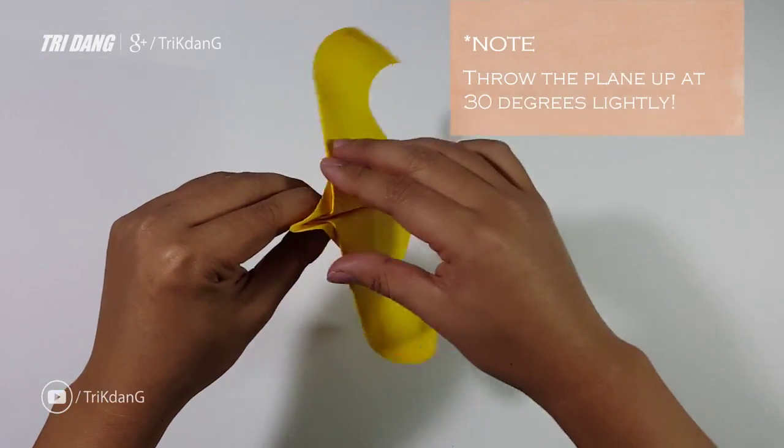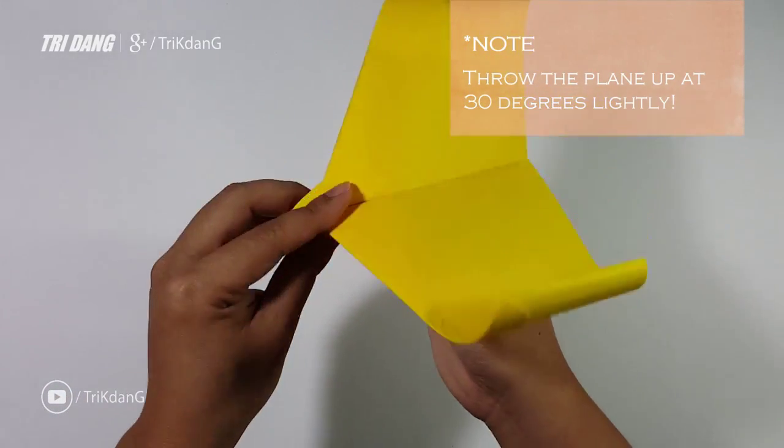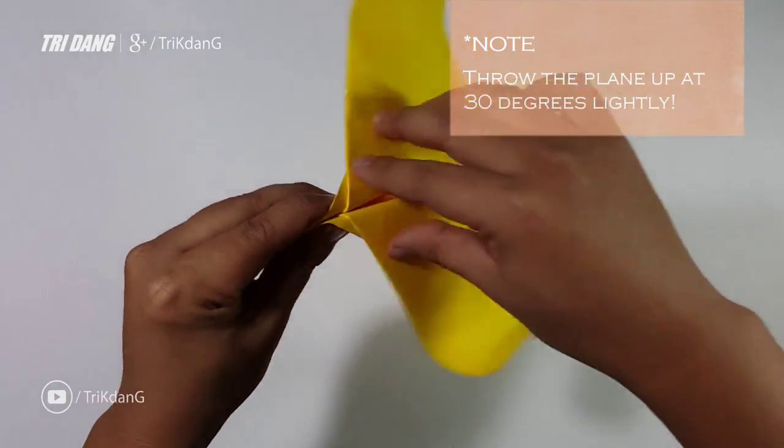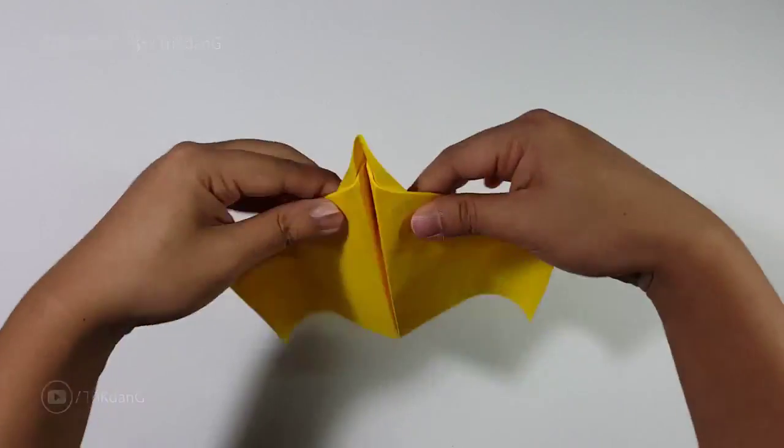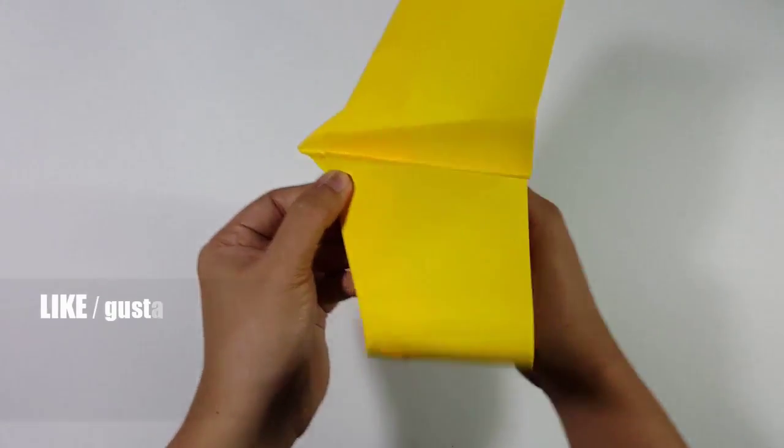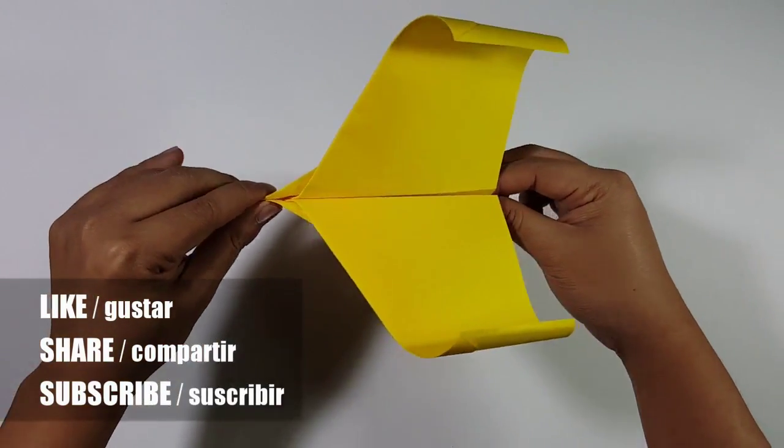And I will explain how you can throw the plane. Do it up at 30 degrees. Do not throw it so hard, just do it lightly. And if the wings do not flap, you need to do more exercise for the eagle.